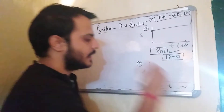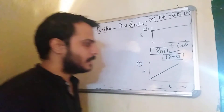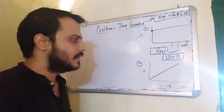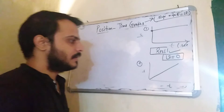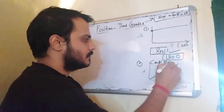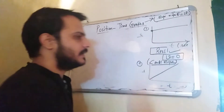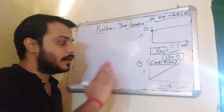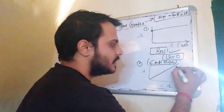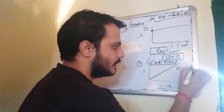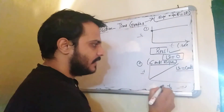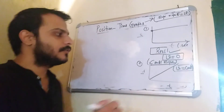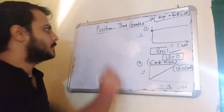The second graph again has S and T axes. You can see that the body's position is changing with time, but this graph has a constant slope. A constant slope means your velocity is constant. So if you have a constant-slope position-time graph, it indicates that the body is moving with constant velocity — position is changing, but velocity remains constant.